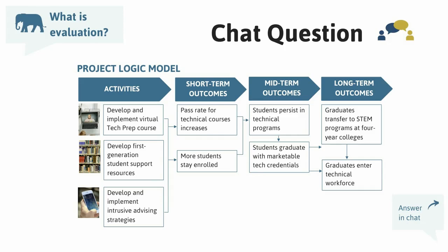Pamela suggests one evaluation question might be: what is the current pass rate for technical courses? In the evaluation you'd want to know the change in pass rate — so to what extent did the pass rate change? Several people are asking about student success rates or graduation rates. I want to point out that measuring graduation rates may be outside the evaluation timeline since ATE programs tend to be about three years long. I also see people asking about implementation questions — those process questions like how were activities implemented and how successful were they. A mix of both process questions and outcomes questions is a great idea.